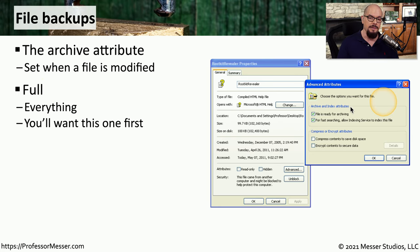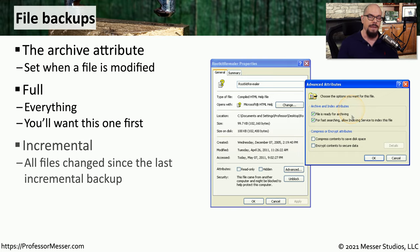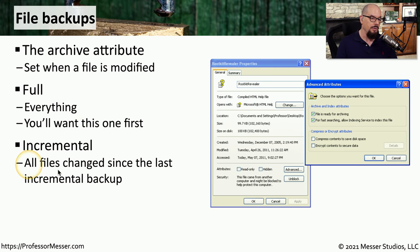Once the backup is complete, the archive bit is cleared, signifying that no changes have been made to that file since the last backup. An incremental backup will occur after the full backup has occurred, and it will back up all of the files that have changed since the last incremental backup.